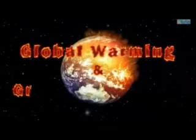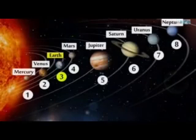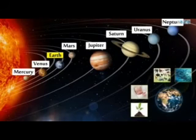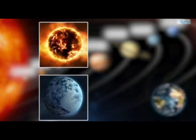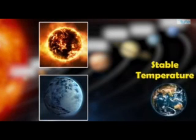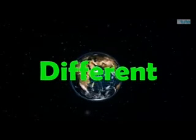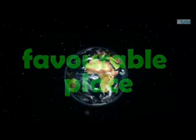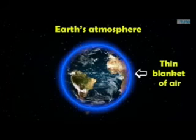Earth is the third planet from the sun and the only planet having a vast diversity of life forms. While other planets of our solar system are either scorching hot or bitterly cold, Earth has relatively stable temperatures. What is making Earth different — such a favourable place to live on? It is the Earth's atmosphere, a thin blanket of air surrounding the Earth from all sides.